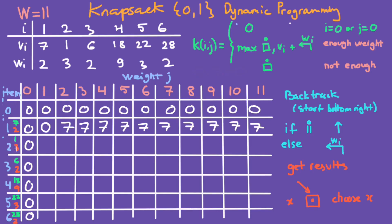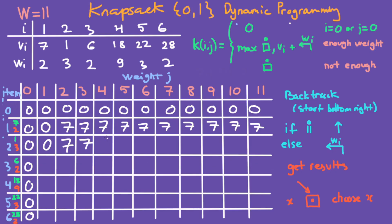For the next item with weight 3: total weight 1 is not enough, so just take the number at the top. Total weight 2 is also not enough — take the number at the top, which is 7. Total weight 3 is just enough, so we take the max of the number at the top (7) and vi (1) plus moving up once and left three times (giving 0) — max is 7. For total weight 4, same logic gives 7. For total weight 5: max of 7 and 1 plus moving up and left three times (giving 7) equals 8.